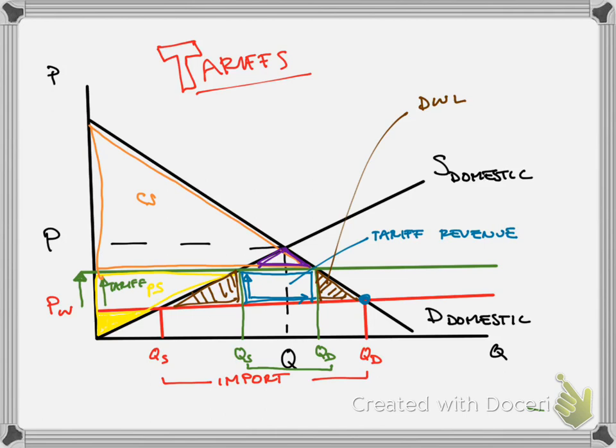So a tariff helps domestic producers. It reduces the surplus of domestic consumers, but they're still better off than they were under no trade, under a closed market. So we still get some gains from trade. It does generate tariff revenue, but it also causes deadweight loss. So it's less efficient.